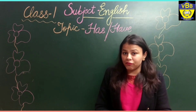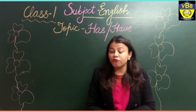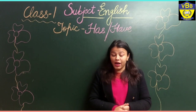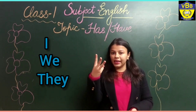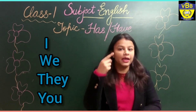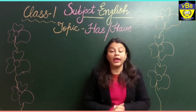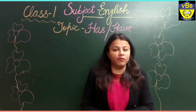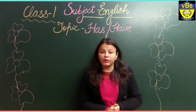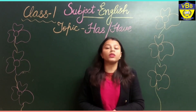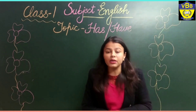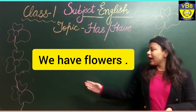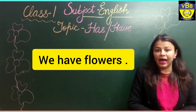Who all are the friends of have? The friends of have are I, we, they, you. When we are talking about more than one person, one animal, or one thing, then we will use have. For example, we have flowers. We means so many people, that is why we have used have.